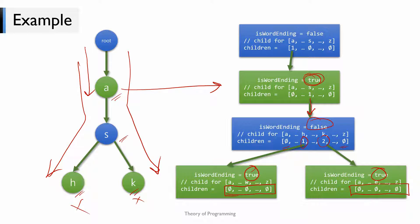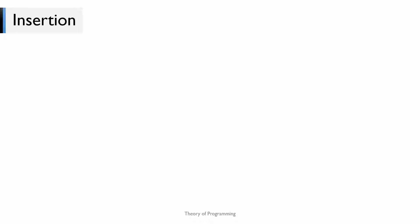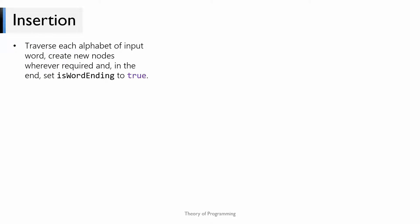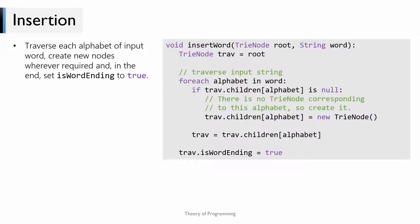There are two main operations on a Trie tree: insertion and query. For insertion, we traverse each alphabet of the input word, create new nodes wherever required, and at the end set isWordEnding to true. The pseudocode takes the root node and the word to be inserted. We use a 'trav' pointer starting from the root, then use a for loop to iterate each alphabet. If the children array doesn't have a child for that alphabet, we create a new one, then traverse to that child.